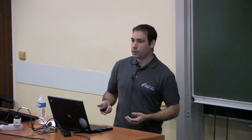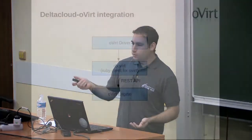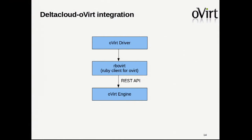Integrating Delta Cloud with oVirt: every provider needs a driver, so there is an oVirt driver written for Delta Cloud. What it basically uses is RB oVirt — a Ruby client for oVirt — and this Ruby client communicates over the REST API with the oVirt engine. So basically, if you are interested in implementing other providers, you need a driver to talk with it and probably something in the middle that knows how to send information using some kind of Ruby interface.